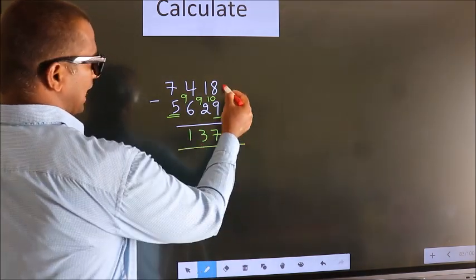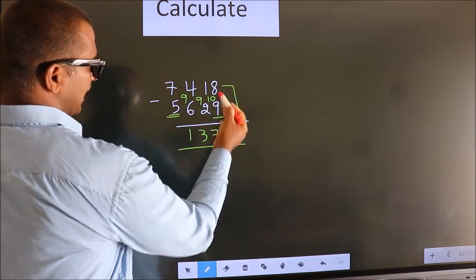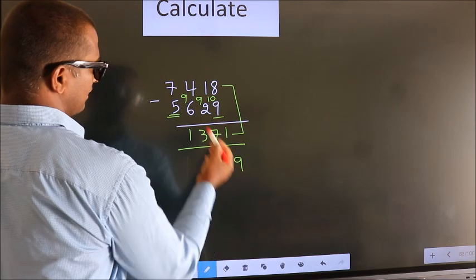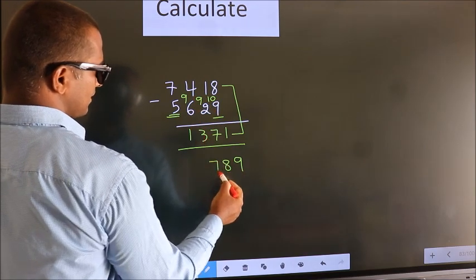Now add these two. 8 plus 1, 9. 1 plus 7, 8. 4 plus 3, 7.